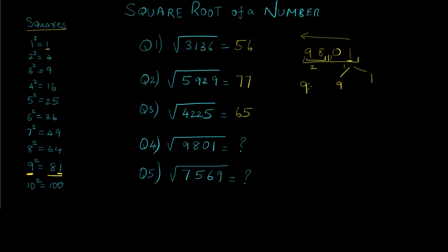We add 1 to 9, giving the consecutive number 10, and multiply it with 9. So 9 times 10 gives 90. Comparing 90 with 98: since 98 is greater than 90 we select the greater candidate out of 9 and 1. So the answer is 99. The square of 99 gives 9801.